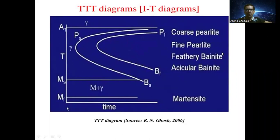Next is the time-temperature transformation diagram, also called the TTT diagram. This diagram represents the transformation products of austenite into pearlite, bainite, and martensite. On the x-axis there is time and on the y-axis there is temperature. The TTT diagram mainly represents the transformation of austenite into various phases.